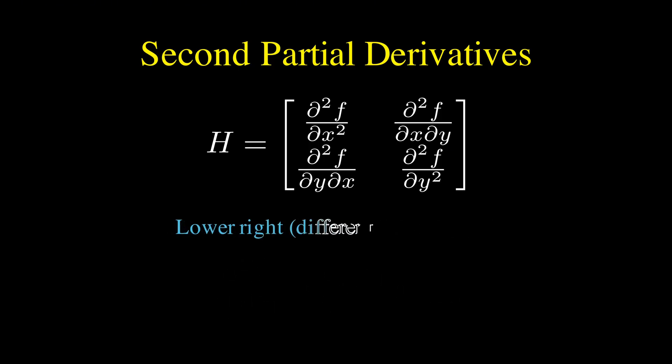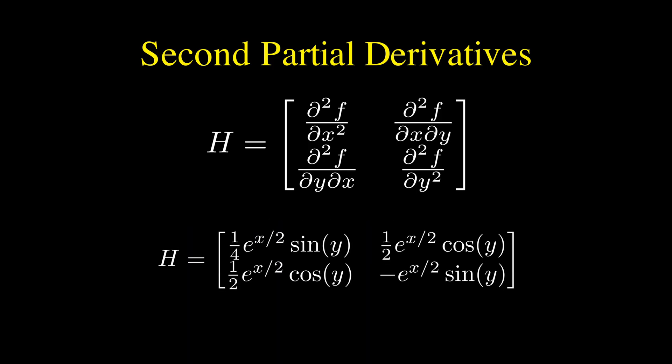And the lower right term, where we differentiate with respect to y twice, gives us negative e to the x divided by 2 sine of y, because the derivative of cosine is negative sine. So, this whole matrix of second derivatives is the Hessian, and you can think of it as a matrix-valued function that takes in a point and gives you a matrix of numbers.